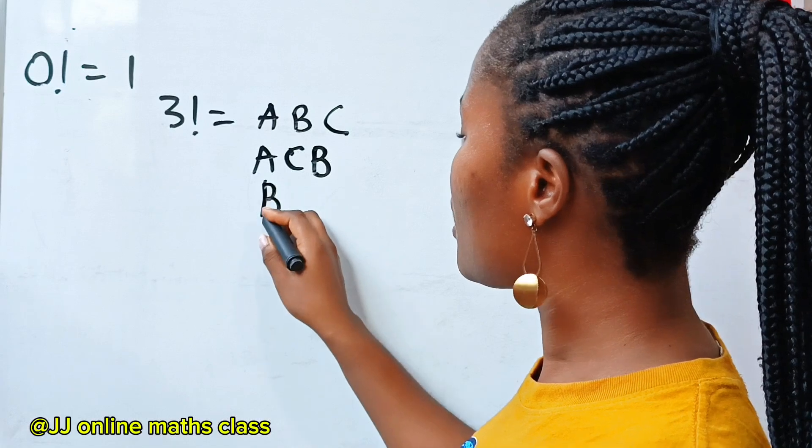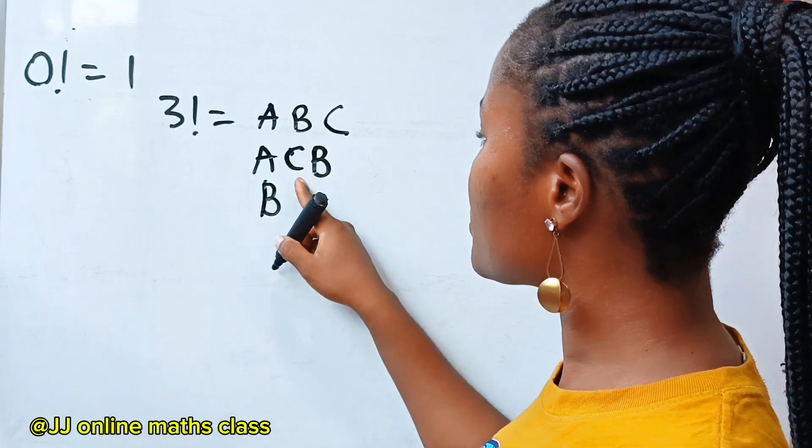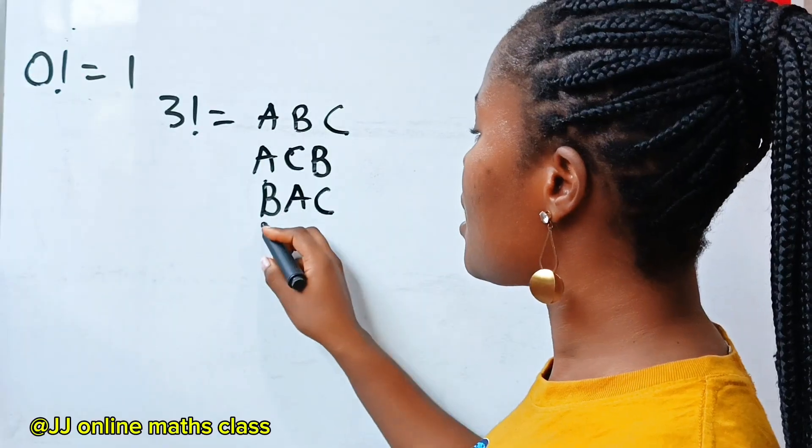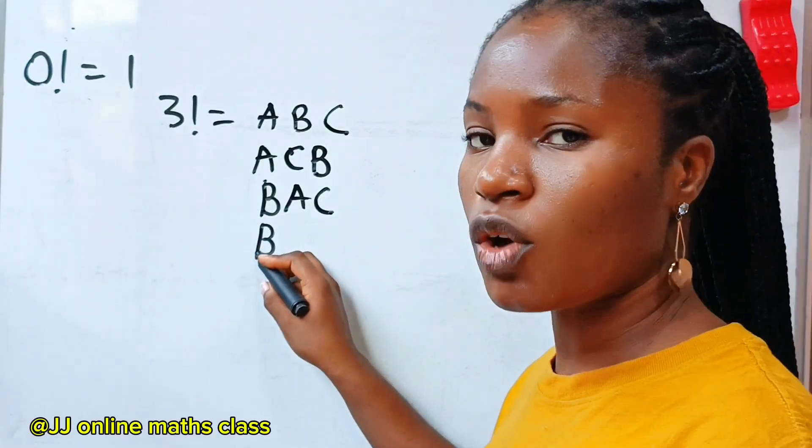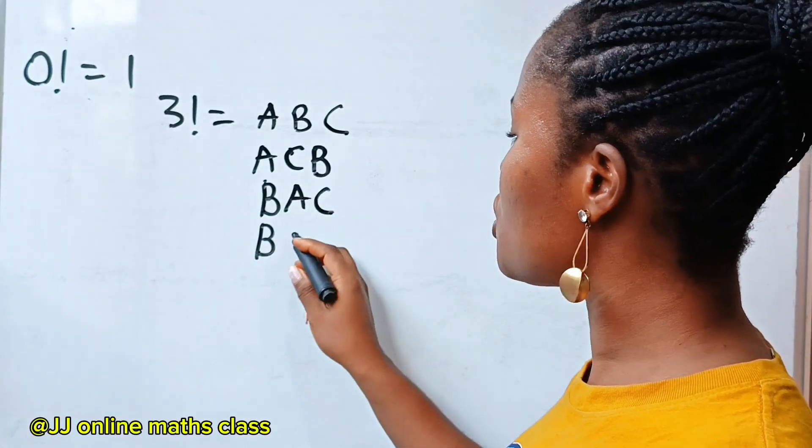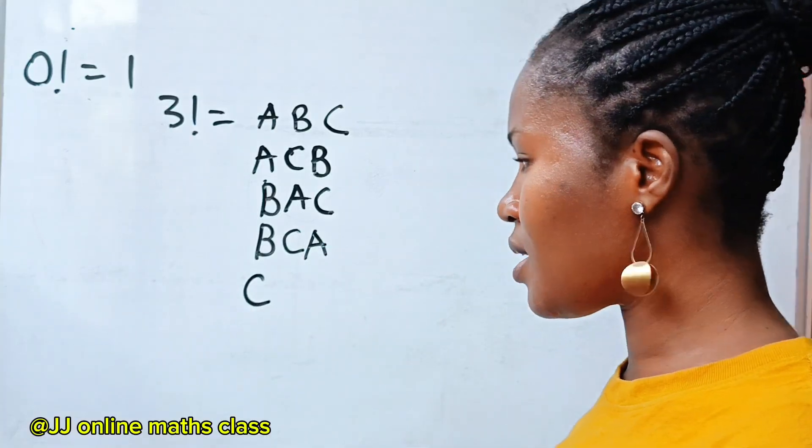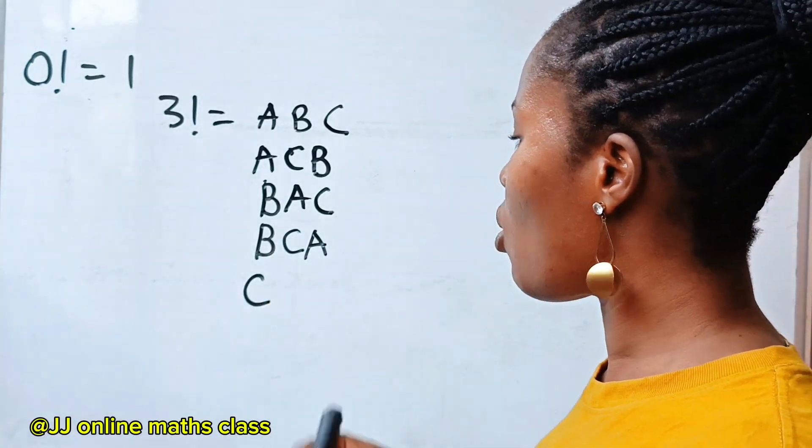Then I can decide to keep B. Then I will change the position of A and C. So I will write A, C. I will still keep B the constant. And then I will change the position to be C, A.